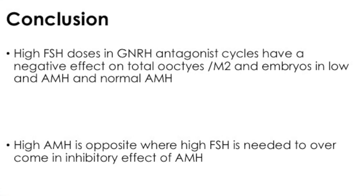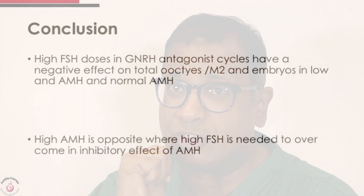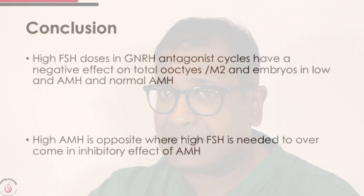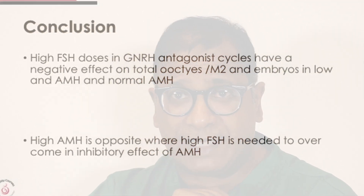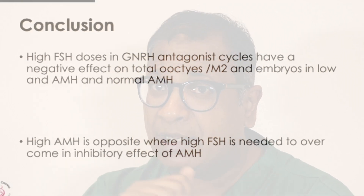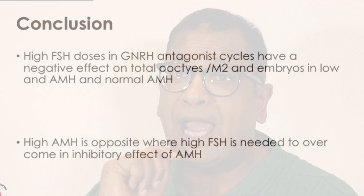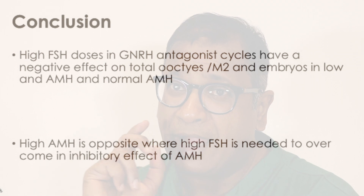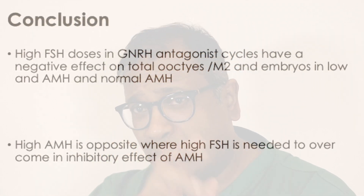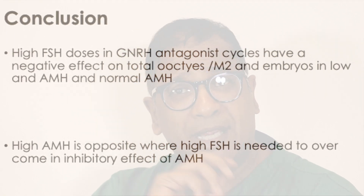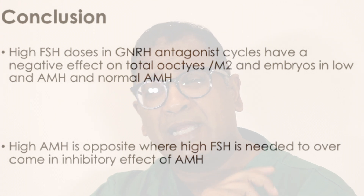In conclusion: high FSH and gonadotropin doses in these cycles have a negative impact — fewer oocytes, fewer embryos, and fewer metaphase 2 oocytes — in women with low or normal AMH. On the other hand, in cases of high AMH, higher doses of FSH do seem to make a difference, providing more oocytes, more metaphase 2, and more embryos. Have a think about it. Look at the ovary, count your antral follicles, chart them, look at your AMH, look at the LH — all of these tell you a story of how stimulation can succeed or fail. Often you'll be able to troubleshoot them. Thank you very much.